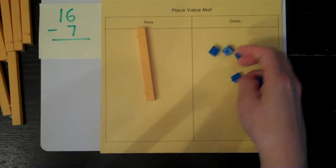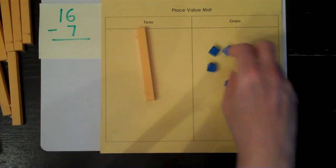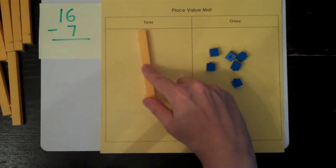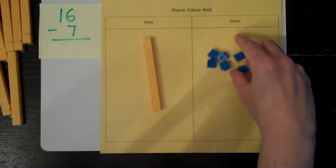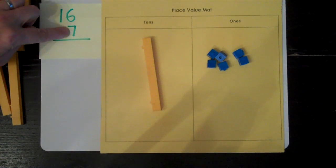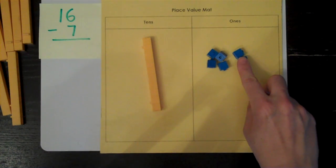One, two, three, four, five, six. I like to double check before I go on. 10, 12, 14, 16. Now I'm ready to take away seven. I always start with the ones place.